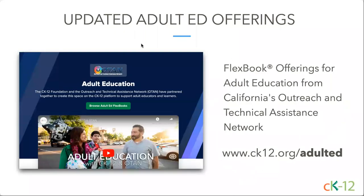Our last content update is our adult ed offering. Over a year ago we partnered with California's Outreach and Technical Assistance Network — OTAN — and created an adult education page. They started pulling resources from different books and creating high school equivalency books, career and technical education books, and an English as a second language book. We did an update to that page — there are now stories, testimonials, and some of their newer books. Those books vary from ones that have pulled all the resources together into the scope and sequence needed, to ones that have drilled down to update the content to be appropriate for an adult learner. Check that out from our subjects browse or straight at ck12.org/adulted.